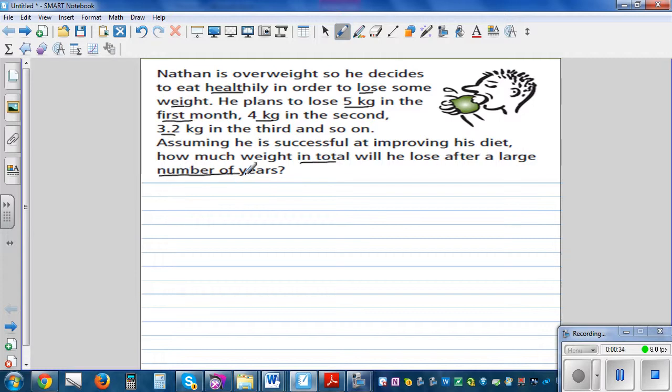Okay, so let's look at the sequence. Basically he starts with a weight loss of 5 kg, and then he wants to lose 4 kg, then he wants to lose 3.2 kg and he wants to continue this way for a number of years. So what's the sequence here? Well, this is not decreasing by subtraction, it's decreasing by multiplying. So let's find the ratio.